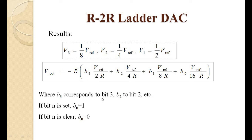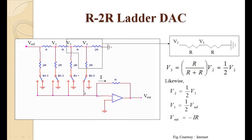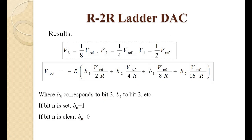The output of the inverting op-amp is equal to −Rf/R × Vin. For each node or each bit, we calculate the separate output voltage and sum them all up using the principle of superposition, to get the final output voltage.